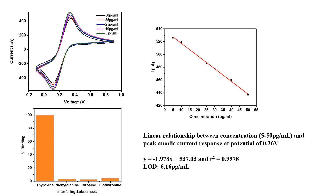On increasing the concentration of thyroxine, the peak anodic current was decreasing, and the limit of detection was 0.616 pg per mL, which covers the physiological range of thyroxine present in blood as well as in saliva. We also tested interference using some structurally similar molecules such as levothyroxine, phenylalanine, and tyrosine, and we found that there was negligible interference.